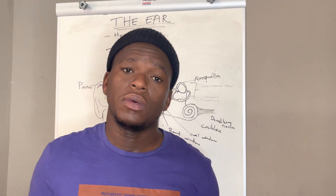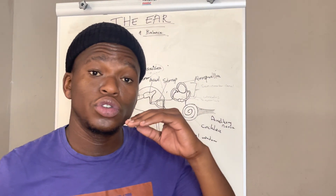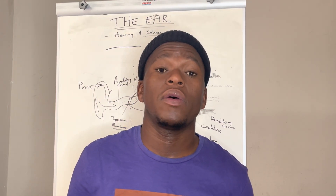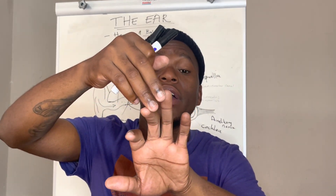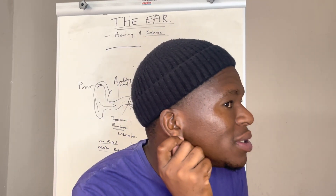Greetings to everyone, welcome to the Biology Hub. For today we are going to do the ear as one of our receptors. The ear is divided into three parts: the outer ear, which is air-filled; the middle ear, which is also air-filled; and the inner ear, which is fluid-filled. The two air-filled parts of the ear play a role in hearing only.